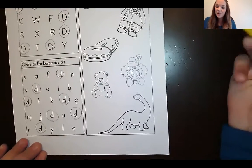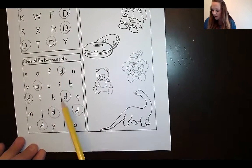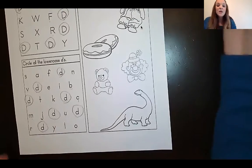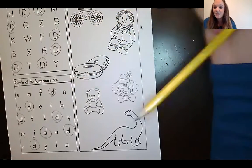All right, good job, guys. Let's count how many lowercase Ds. One, two, three, four, five, six, seven. So you should have seven uppercase and seven lowercase.